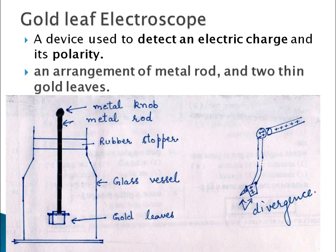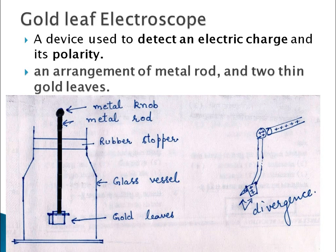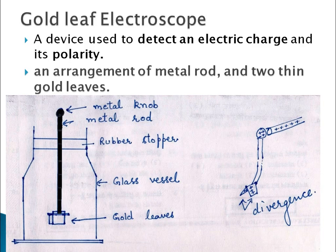Now, when we touch a charged rod to the metal knob, charge will pass to the metal knob and to the gold foils. Then what happens? Divergence will be seen.